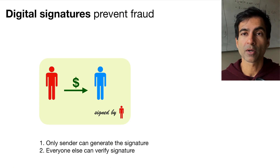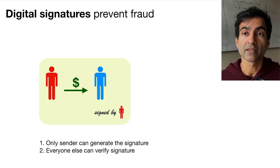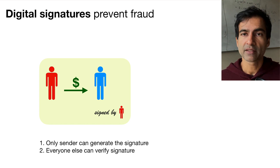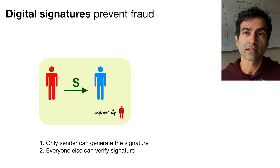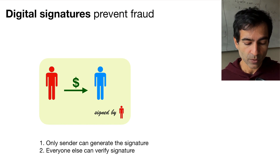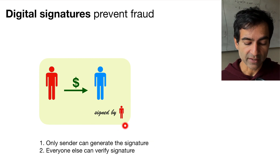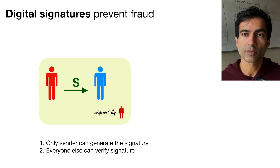Let's start with the fraud problem. A really useful tool to prevent fraud is the concept of a digital signature, which has been around in cryptography for a long time. This is a cryptographic scheme that allows someone to sign messages in such a way that, if a transaction is signed by the sender, only the sender can generate the signature. That's the first property.